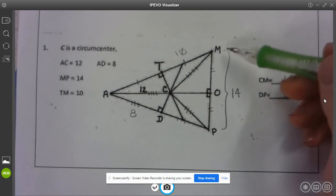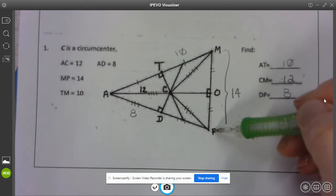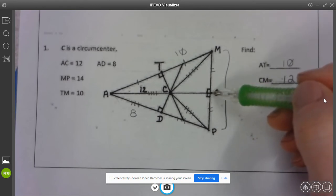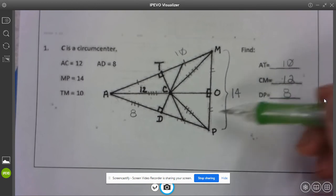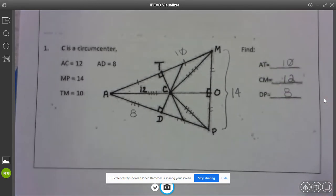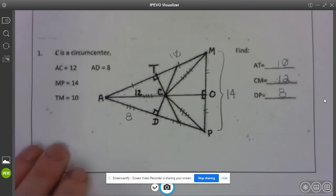So if they had asked us to find MO or OP since this is the perpendicular bisector it would cut 14 in half so both of those would be 7 if it asked us. It didn't but if it did.